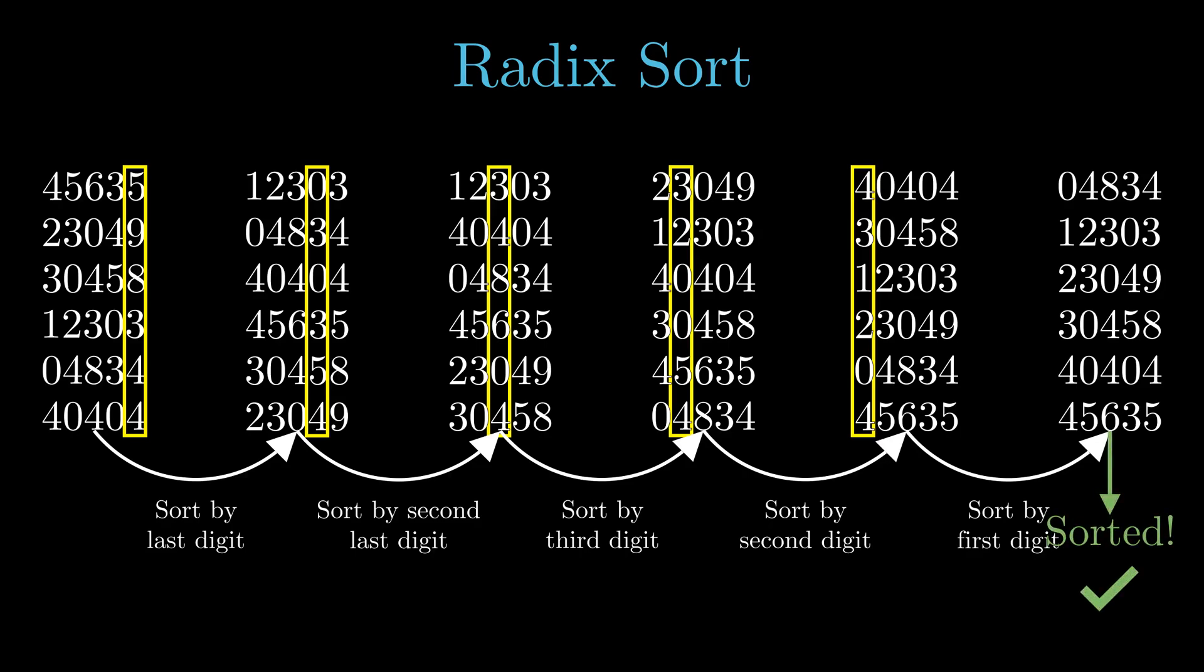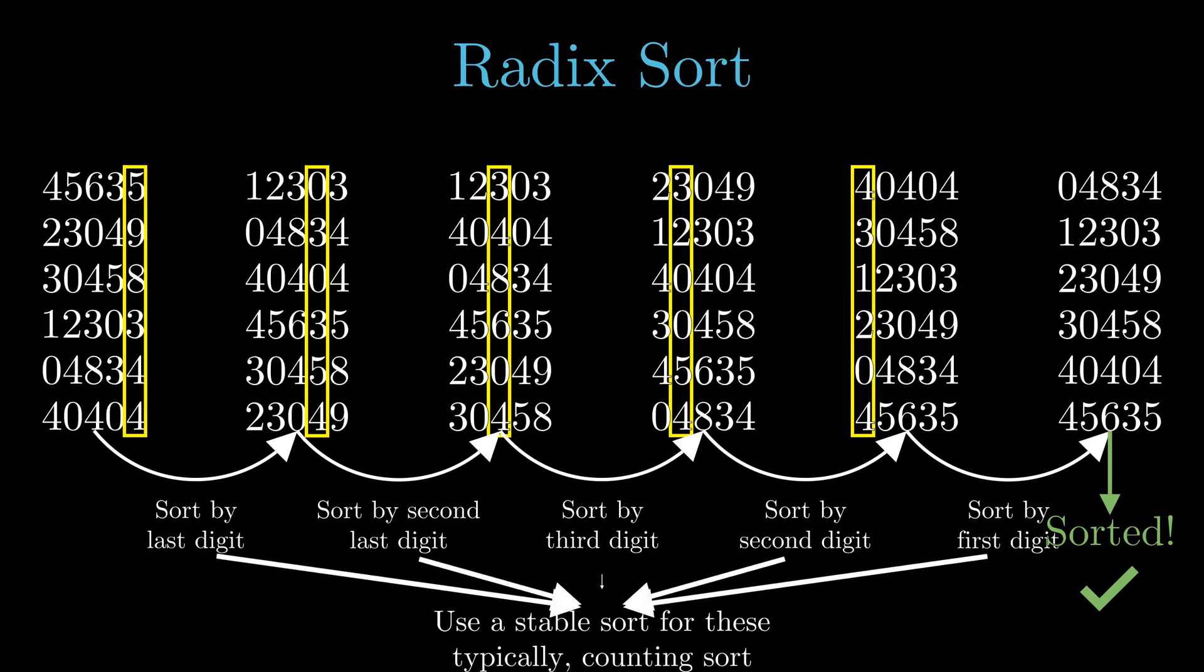When you have sorted the numbers by all the digits in this way, the original list is sorted as you can see. The important point is that the sorting algorithm that we have to use to sort the numbers by specific digits needs to be stable.